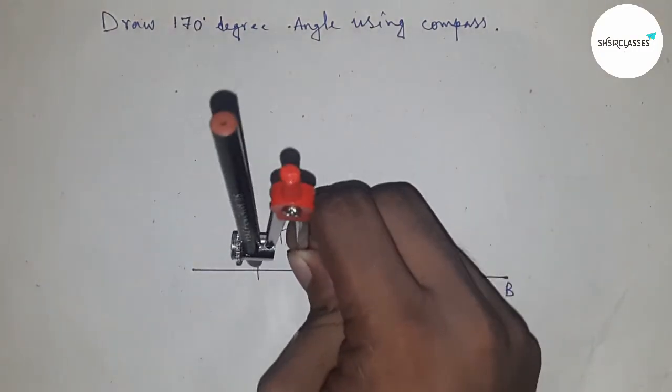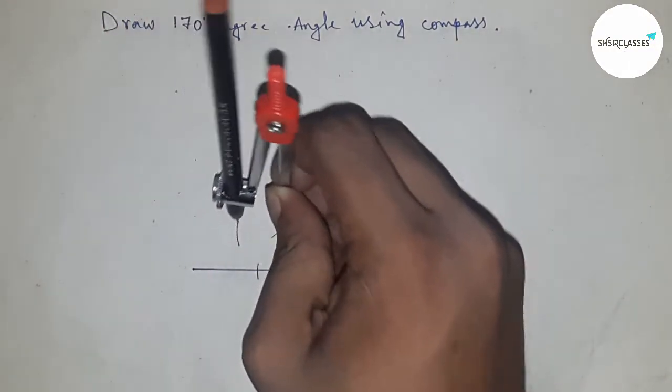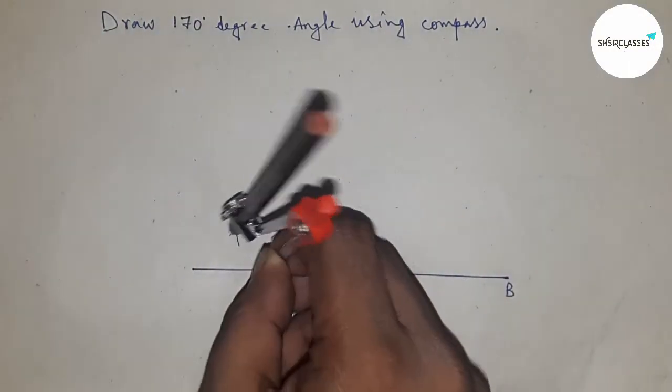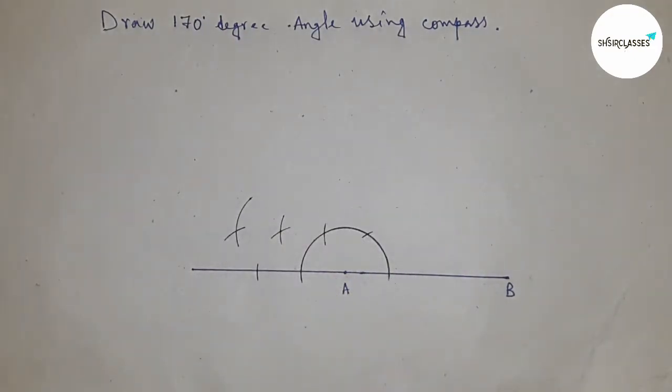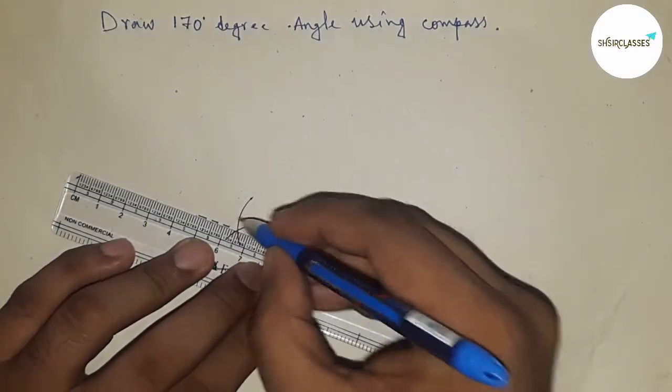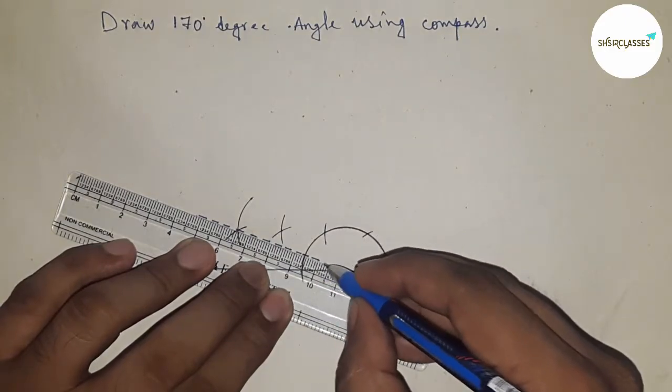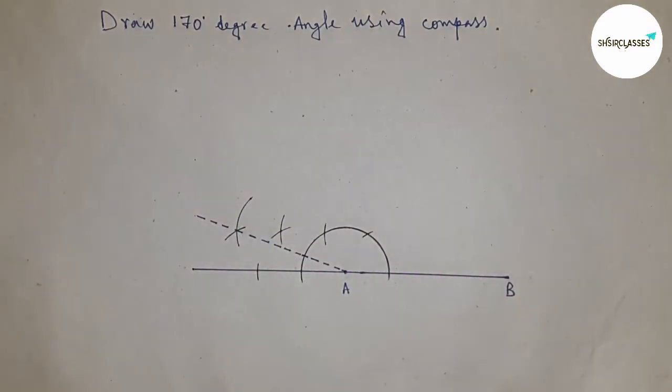Next, putting the compass here and drawing arc, and with the same length, cut the arc by this way. Next, joining this to point A.